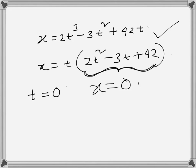So this is a quadratic equation, and we can see whether this equation has any real root. If this quadratic equation has any real root for t, then we know that for those values this part will be 0.